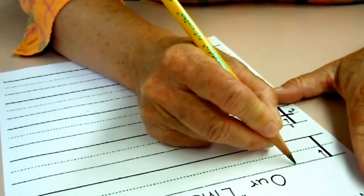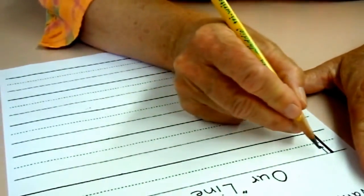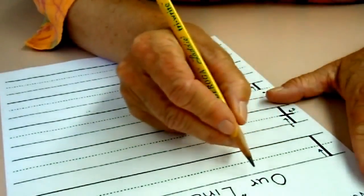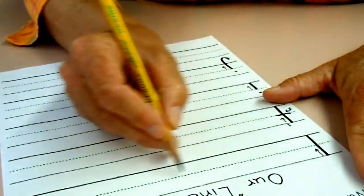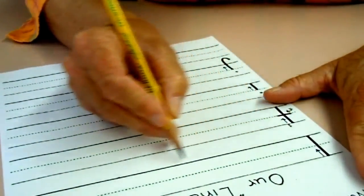And letters and numbers always start at the top and go down. We have three lines. This is the sky at the top, the fence in the middle, and the ground at the bottom.